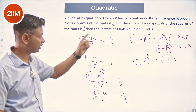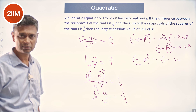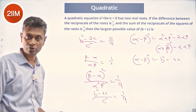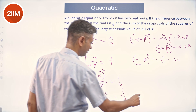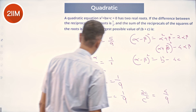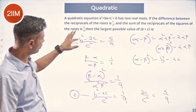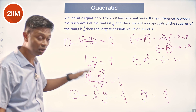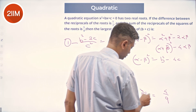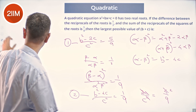Now we have two equations: (b² − 2c)/c² = 5/9 and (b² − 4c)/c² = 1/9. Subtracting the second from the first, the b² terms cancel and we get 2c/c² = 4/9, which simplifies to 1/c = 2/9, so c = 9/2.